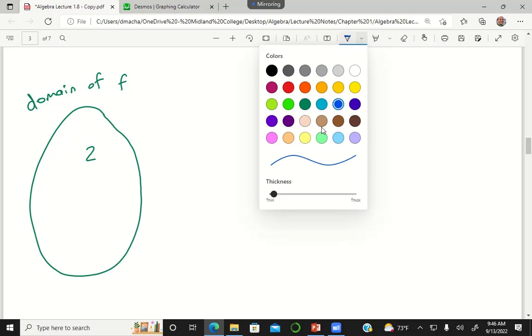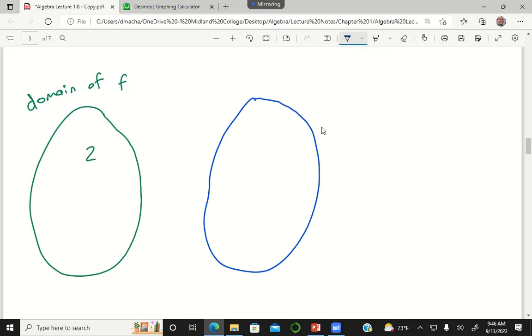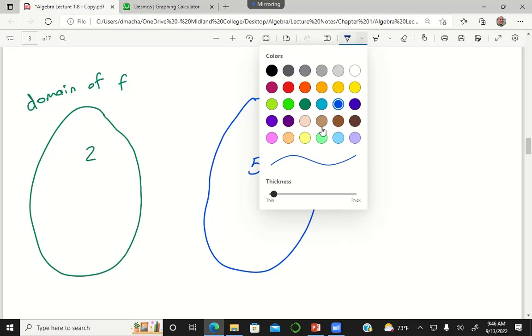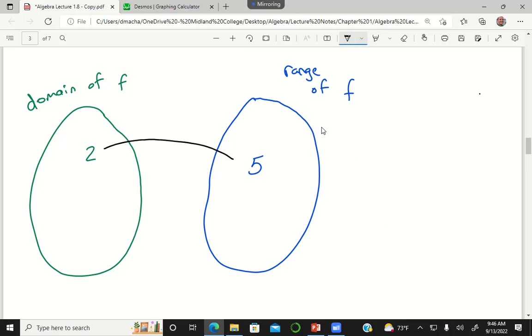So in my case, we'll call this a green circle, we'll call this the domain of f, and somewhere in my domain we have the number 2. And this blue circle we'll say is the range of f, and so somewhere in the range we had 5, because I told you that the number 2, whenever I did the function f to it, the function f mapped the input value to the output value 5.